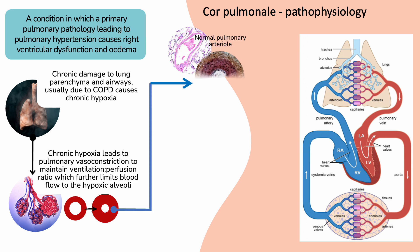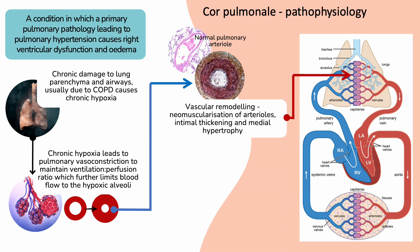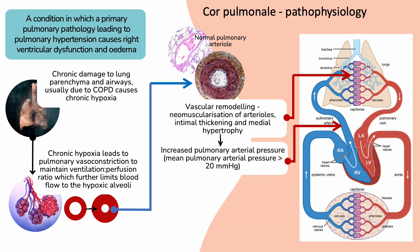Long-standing hypoxia gradually leads to vascular remodeling of the arterioles with neomuscularization, intimal thickening, and medial hypertrophy. The vasoconstricted remodeled arterioles cause increased pulmonary arterial resistance, leading to increased pulmonary arterial pressure, with the mean pulmonary arterial pressure exceeding 25 mmHg.